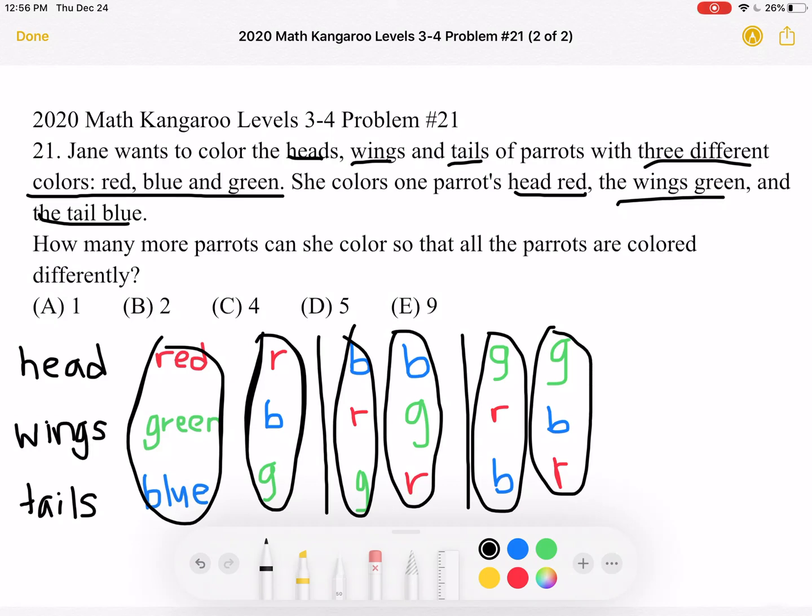However, she already did this first combination over here. So we need to subtract one because she already counted it. So six minus one is equal to five, which is answer choice D.